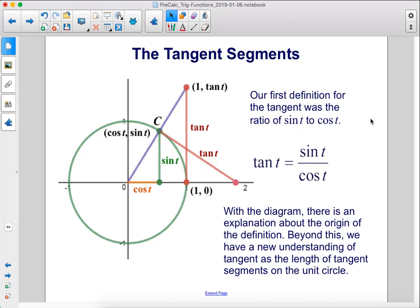Our first definition for the tangent was the ratio of sine t to cosine t: tan t equals sine t over cosine t. With the diagram, there is an explanation about the origin of the definition. Beyond this, we have a new understanding of tangent as the length of tangent segments on the unit circle.